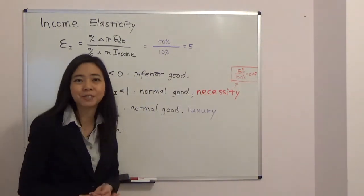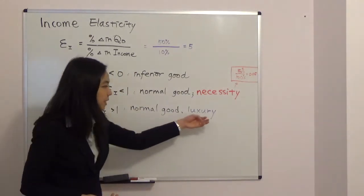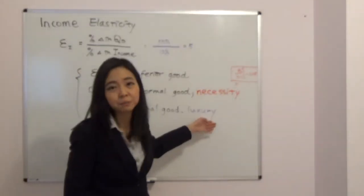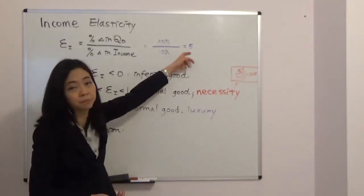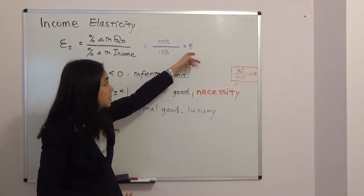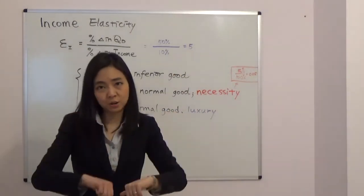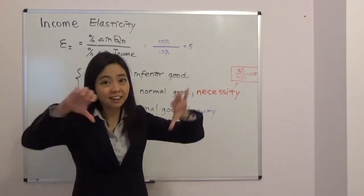So when there is a recession, if you're selling luxury, you're going to suffer the most because of this big income elasticity. When people's income are going down, then they are going to consume a lot less of your good.